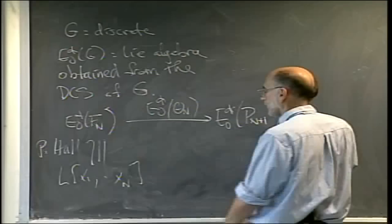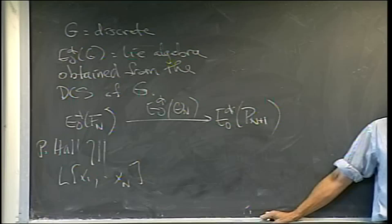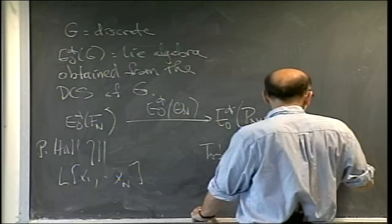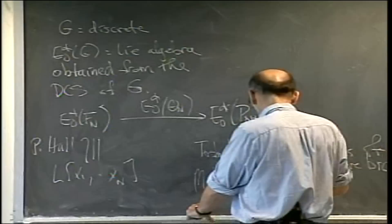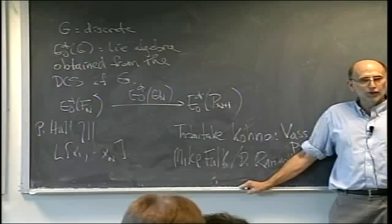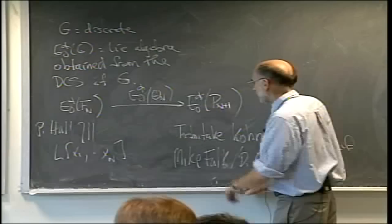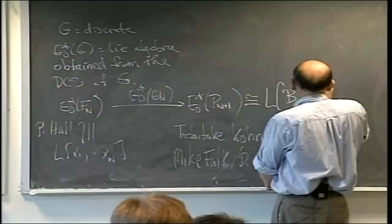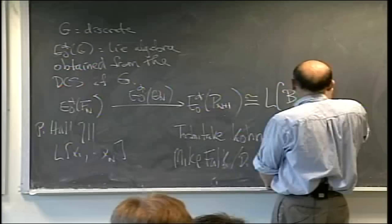Philip Hall's theorem is that the Lie algebra of the free group is isomorphic to the free Lie algebra on n generators - specifically, the projections of the x_i's we talked about earlier. Several people in this room have studied the Lie algebra for the pure braid group. In particular, Toshitake Kohno used this in his work on Vassiliev invariants of pure braids, and Mike Falk and Dick Randell studied these kinds of Lie algebras in a wider framework. The answer is the free Lie algebra on symbols b_{ij}, where 1 ≤ i < j ≤ n+1, modulo what Toshitake called the infinitesimal braid relations.